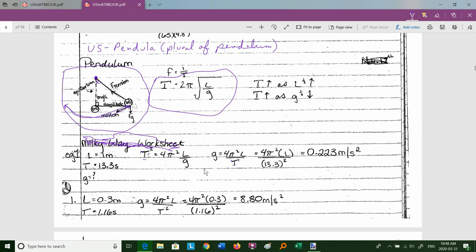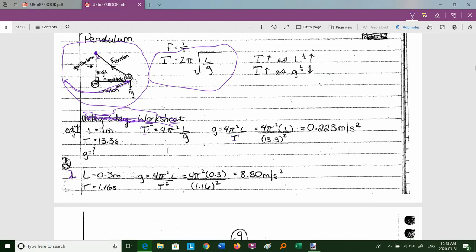So if you're a space traveler, always bring a pendulum with you, so you can find out what the gravitational field constant is. Second example, let's call that example two. If I'm given a length of 0.3 meters in a period of 1.16 seconds, I can get the gravitational field constant, and that's 8.8 meters per second squared.